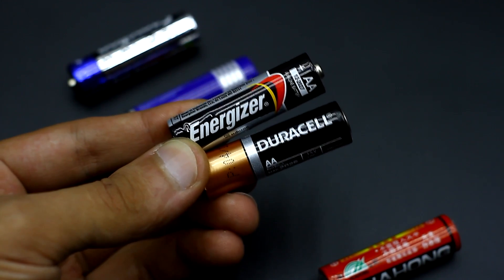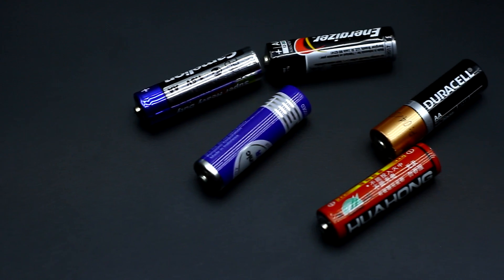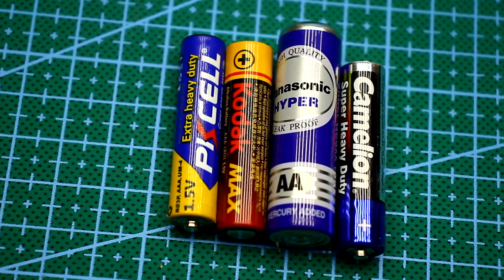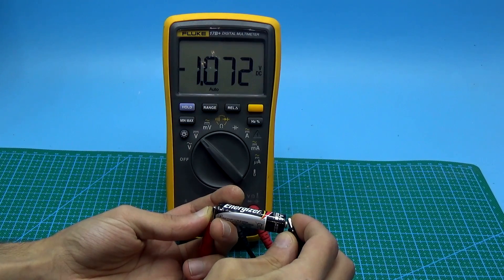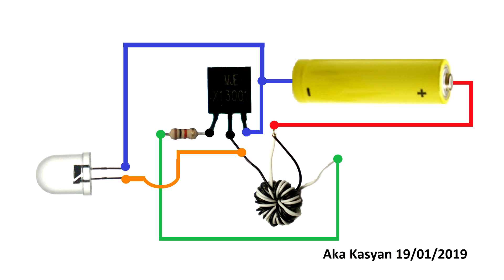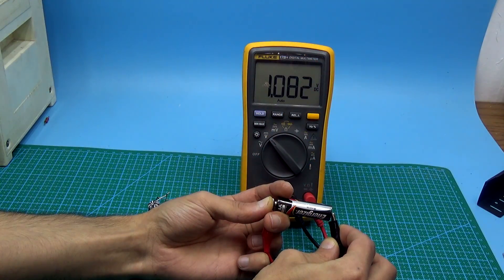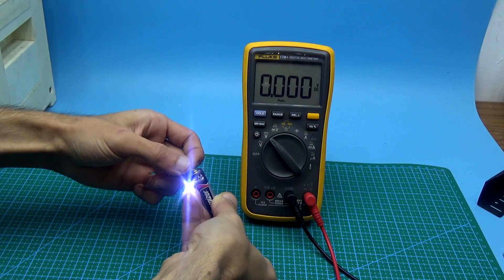But what about the batteries that are already dead? The answer is simple — if there is no place to utilize them you can squeeze all the remaining energy out of them. We throw away batteries when they stop working in a device, but are they discharged to the end? In fact, no — they can still serve for quite some time. Here is a simple extra-low-voltage converter — a whole flashlight — that will work from dead batteries. Such a simple circuit will allow you to build a good flashlight with your own hands in minimum time, and will pump out all the juice from the dead battery.